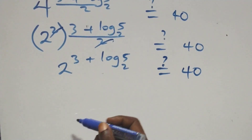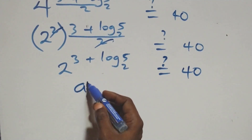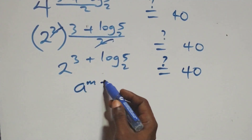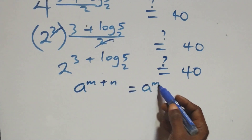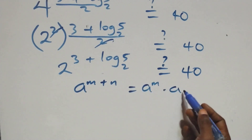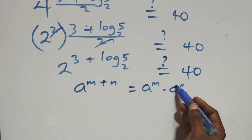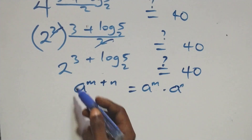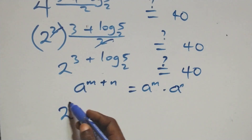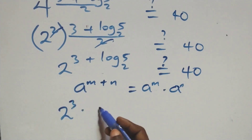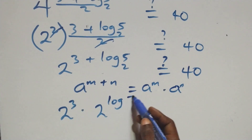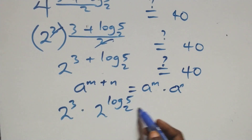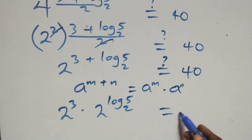Applying the index law — a raised to the power n plus m equals a raised to the power n times a raised to the power m — this becomes two raised to the power three, times two raised to the power log five to base two, equals forty. Two cubed is eight, and two raised to log five to base two equals five, giving eight times five equals forty.